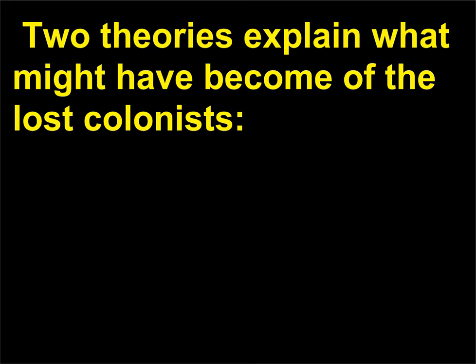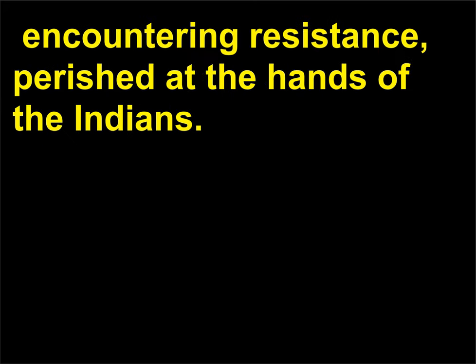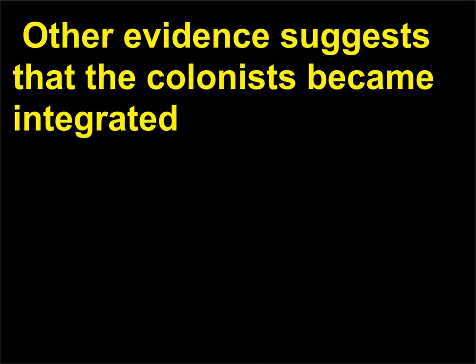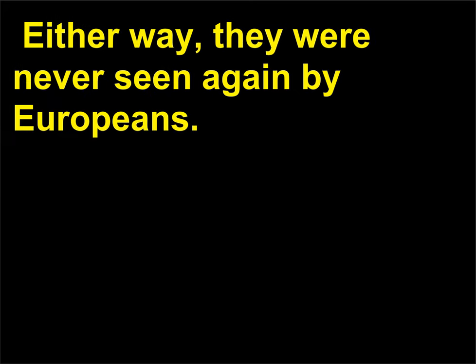Two theories explain what might have become of the lost colonists. Since the shore of Chesapeake Bay was their original destination, the colonists might have moved there but, encountering resistance, perished at the hands of the Indians. Other evidence suggests that the colonists became integrated with several Indian tribes living in North Carolina. Either way, they were never seen again by Europeans.